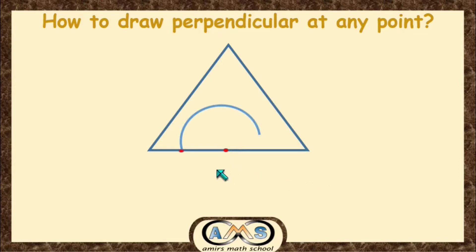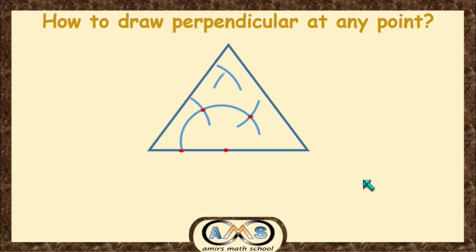Then, taking this point as the center, draw another arc with the same radius. Again, taking this point as the center, draw another arc with the same radius, and another one. Now, taking this point as the center, using the final arc, join this intersecting point to this point. This line is perpendicular to this side of the triangle.